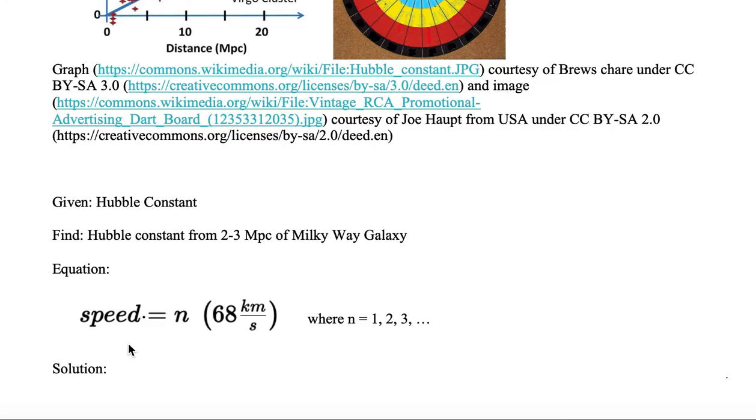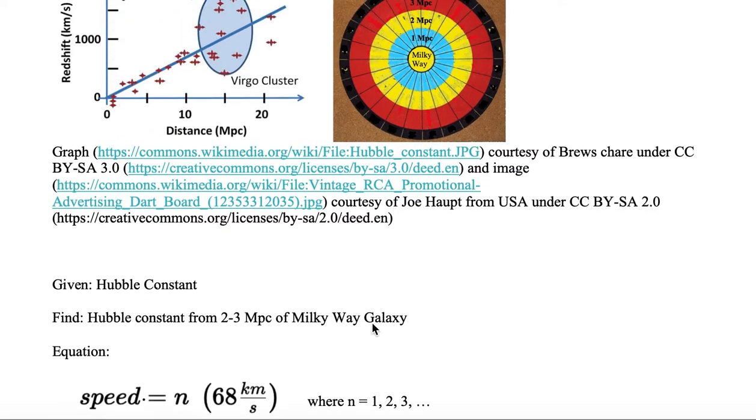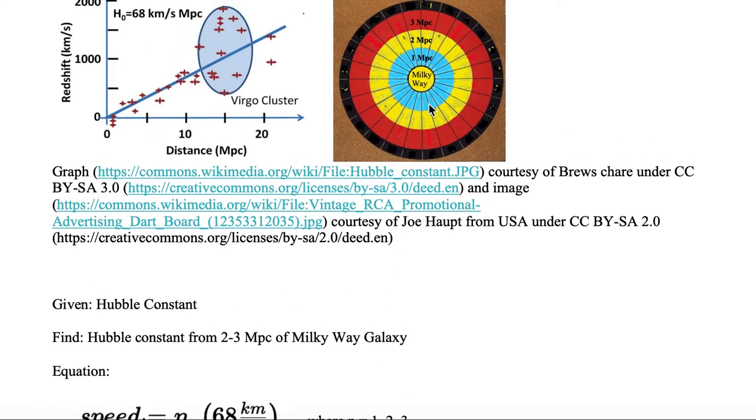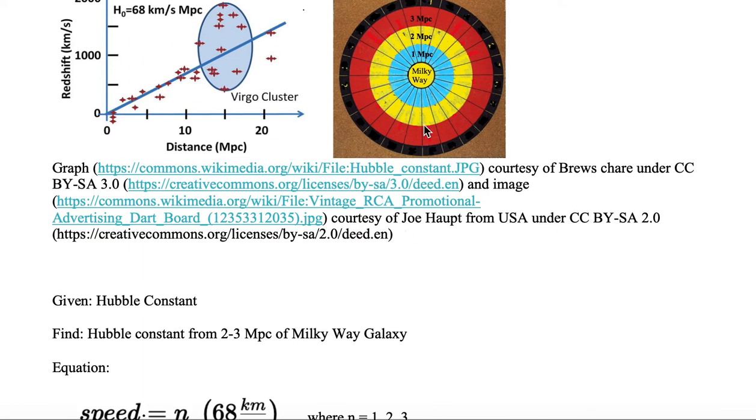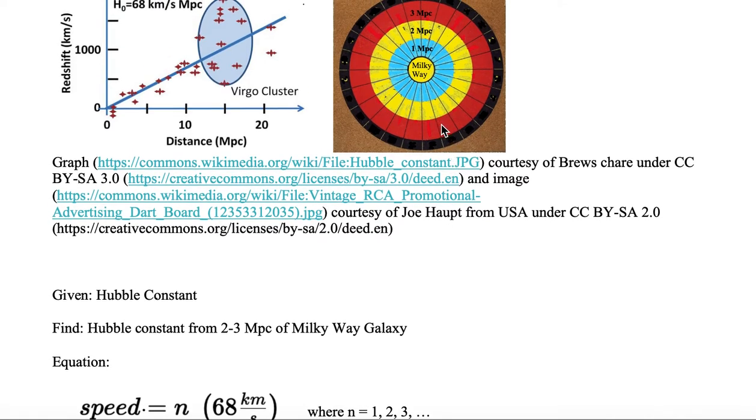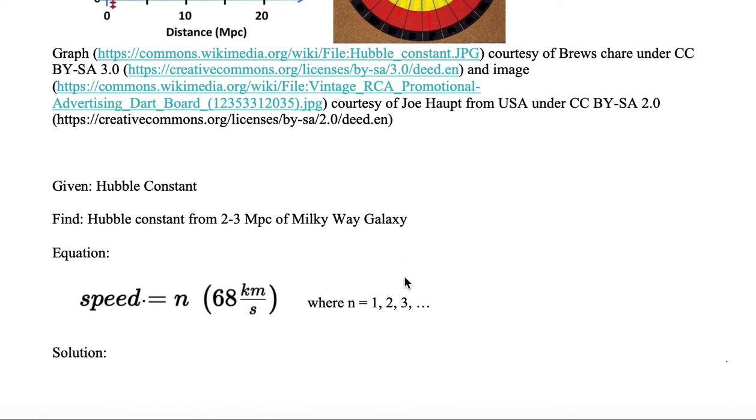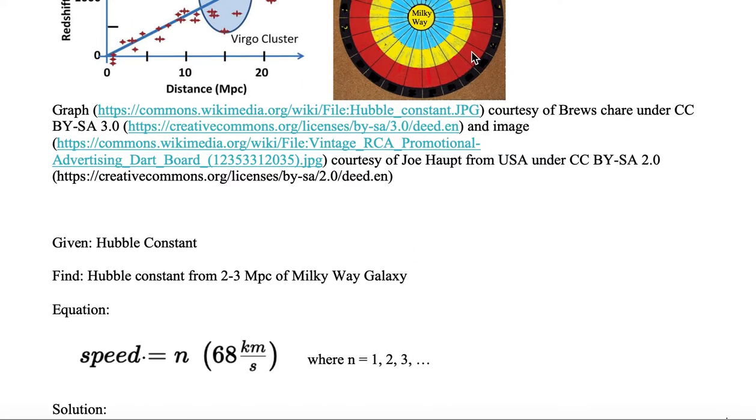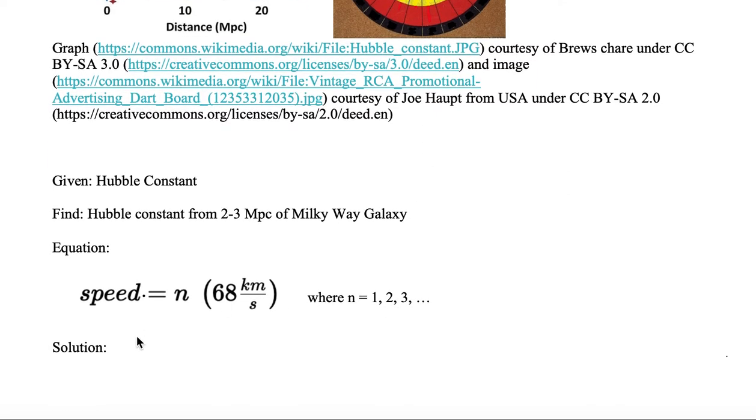We're given an equation for speed, which is equal to n times 68 kilometers per second, where n is equal to 1, 2, 3, where the value for n is the distance in megaparsecs. So n equal to 1 is between 0 and 1 megaparsecs, and n equal to 3 is between 2 and 3 megaparsecs, or the red ring. Since we are looking for between 2 and 3, we know that we can identify n to be equal to 3.